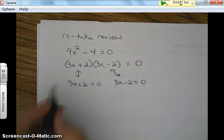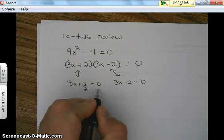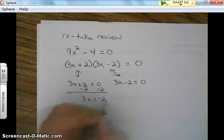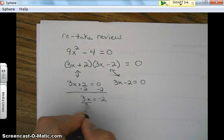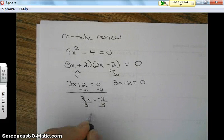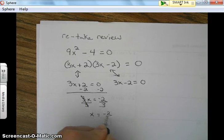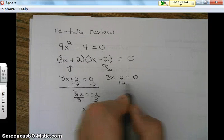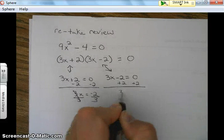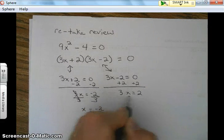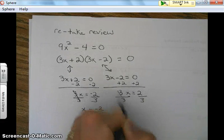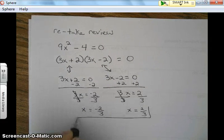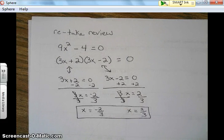We just need to solve for X. We undo addition first. Then we undo multiplication. And there is one solution, and there is the other solution. And that's solving by factoring.